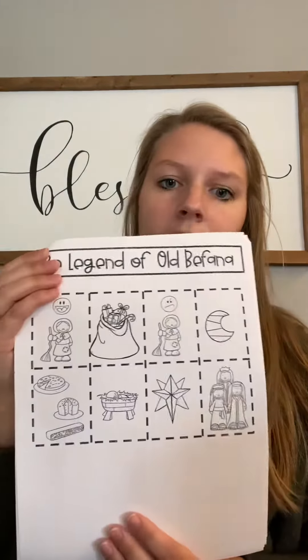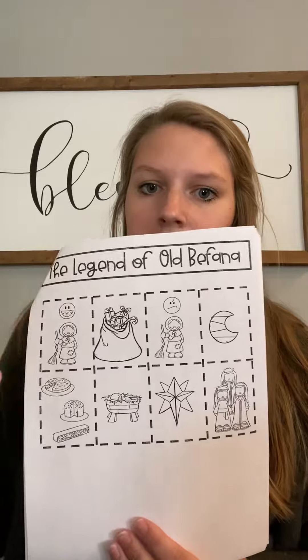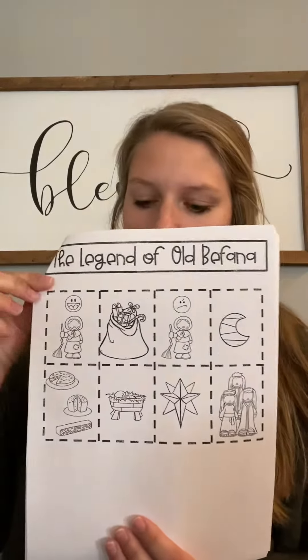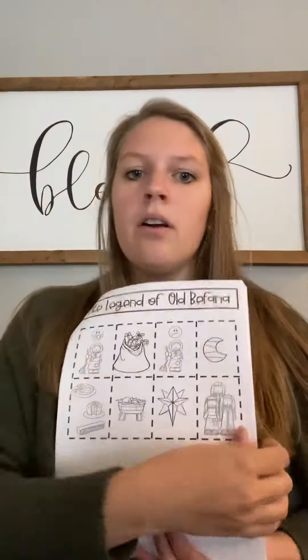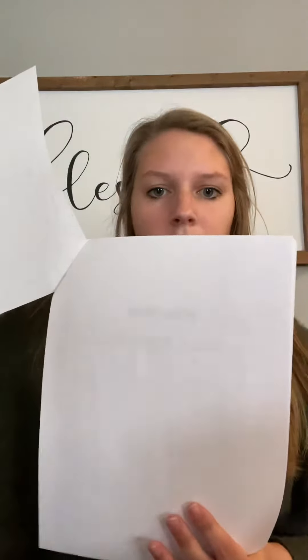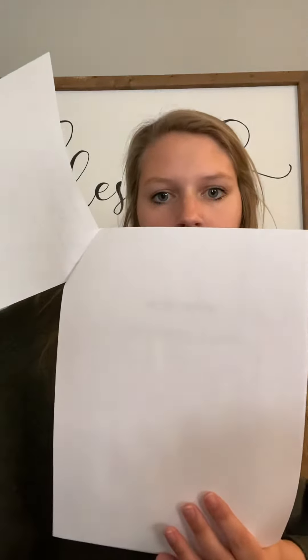What you need to do is listen to the story — I have also posted it on our Google Classroom — and then you're going to put these pictures in order of how they happen in the story. You'll need to cut everything out and put them in order on the next sheet that is blank, so you can tape or glue them on that next sheet.